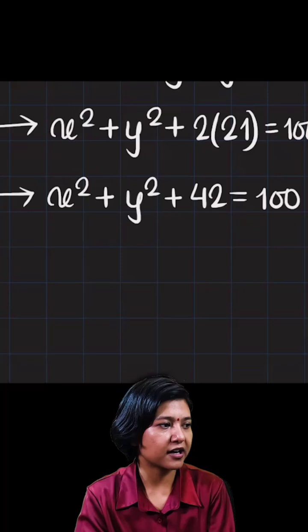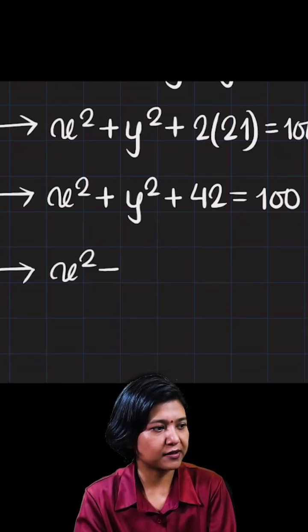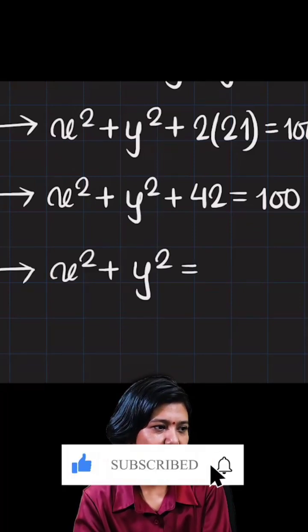Removing 42 from 100 gives you the final answer. So the answer has to be 100 minus 42, which is 58.